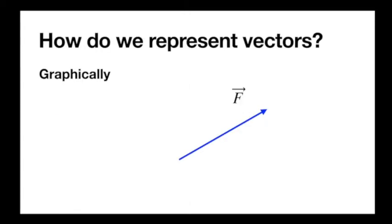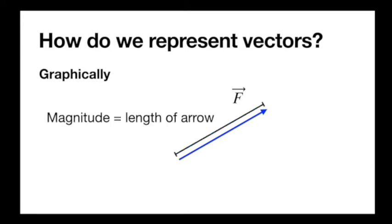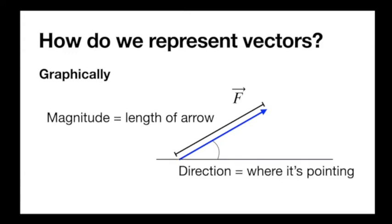The first way we're going to talk about representing vectors is graphically. Just textually, when there's a little arrow above a variable, that means it's a vector. So here, f — normally used for forces — is a vector. I'm representing it graphically with this blue arrow. How does this show us a magnitude and direction? Well, magnitude is its length. Longer vector, greater magnitude. Direction is where it's pointing.